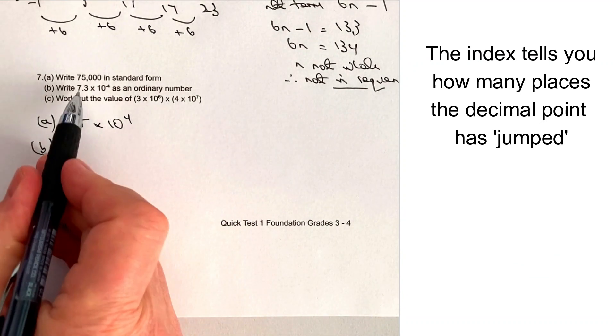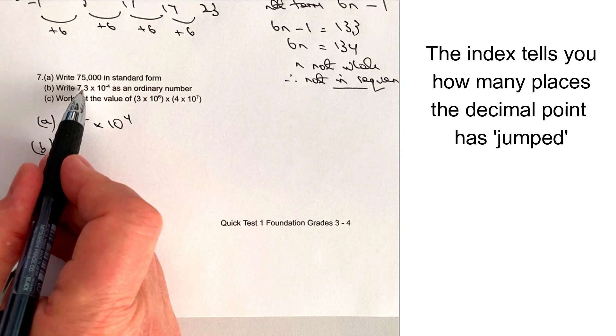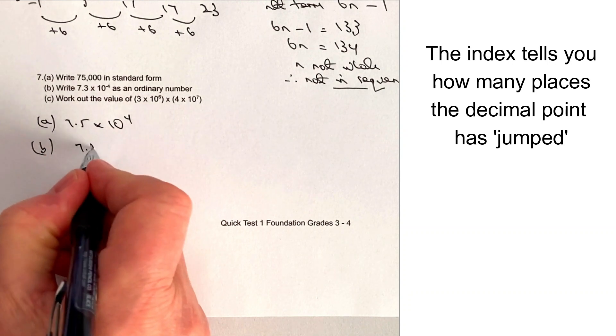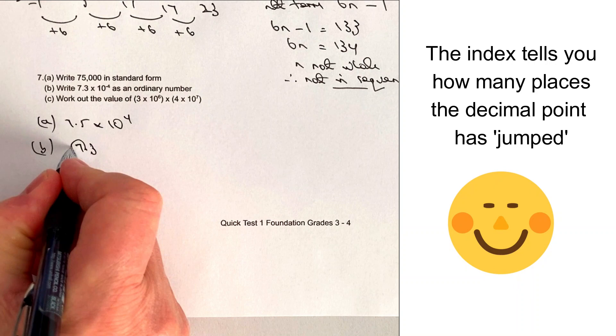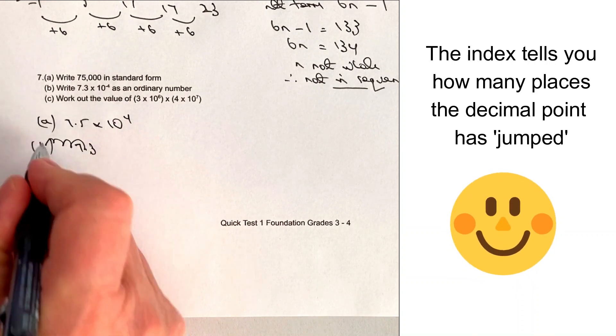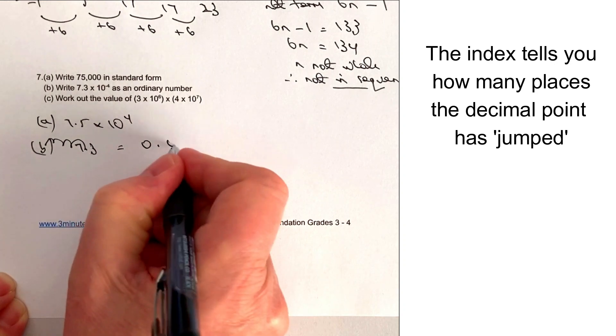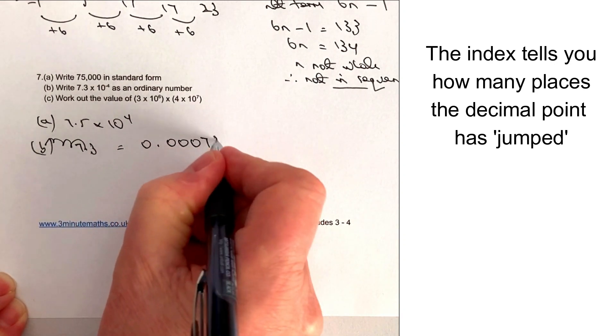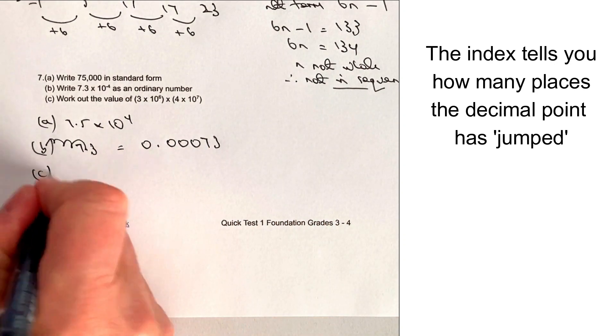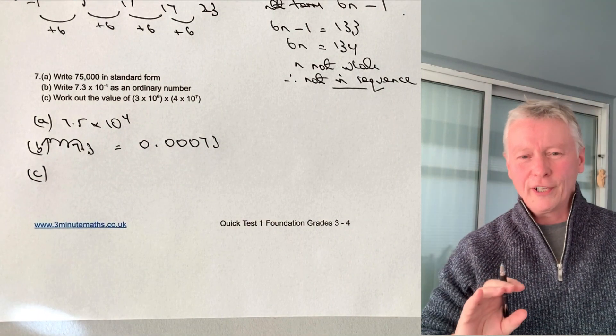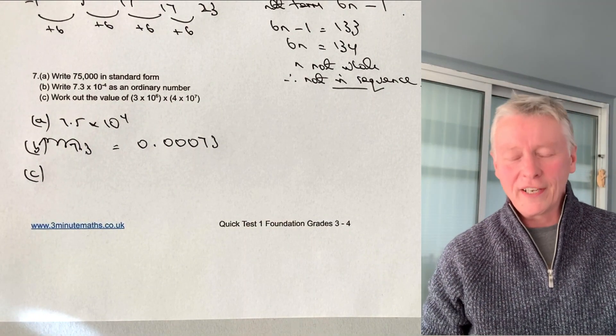With part B, we're writing it back as an ordinary number. So I've got 7.3. I'm going to move it back. One, two, three, four. It's minus four. So that's going to equal 0.00073.